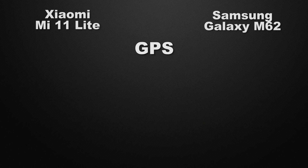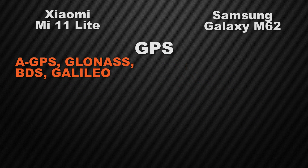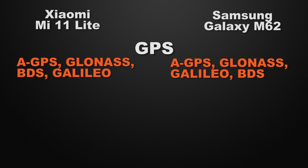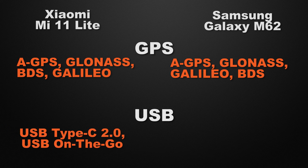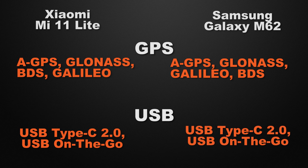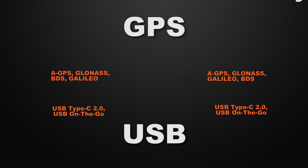For positioning chips, both the 11 Lite and M62 have GPS with Galileo and BDS support, so it's a tie. For USB connectivity, both devices come with a USB Type-C 2nd generation connector with OTG support, so it's a tie here as well.